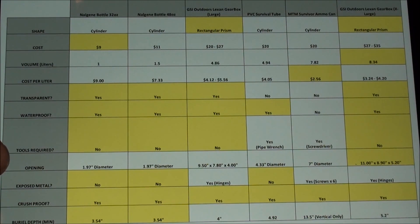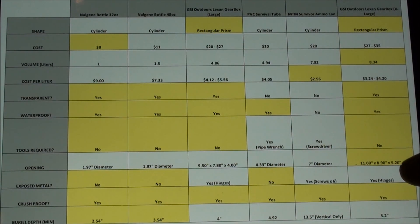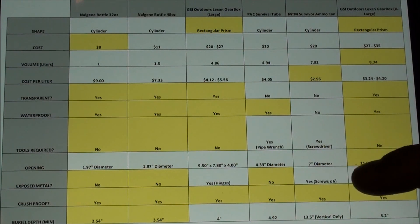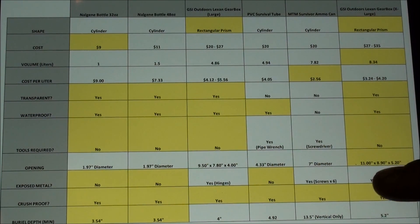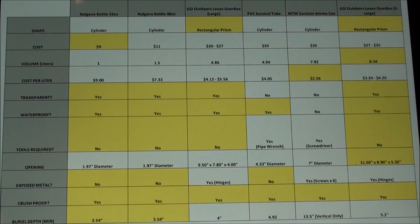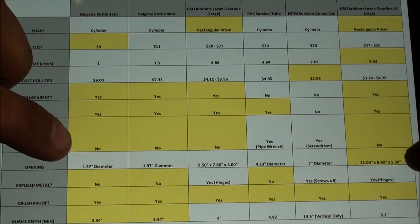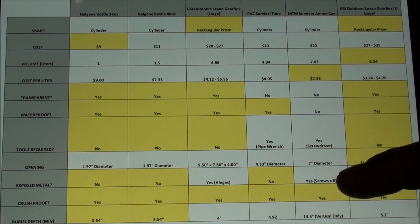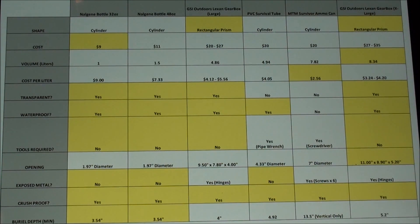So with regard to the size of the opening so the maximum size of opening so the largest kind of item that you could put in there the GSI outdoors Lexan gearbox extra large won that particular category. It's much larger than any of the other ones even the diameter of the survivor ammo can at seven inches, both the length and the width of the extra large version surpass that. The next category to go through is for exposed metal. You're talking about having something buried under the ground where there's moisture and if there's any kind of exposed metal it's going to rust over time. So the Nalgene water bottles and the PVC survival tube have no exposed metal on the outside. The GSI outdoors gearbox has metal on the hinges and then the survivor ammo can has six screws so that's the exposed metal for those particular containers.